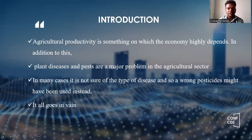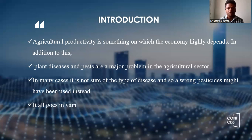Introduction. Agriculture productivity is something on which the economy highly depends on. In addition to this, plant disease and pests are a major problem in the agricultural sector. In many cases, it is not sure of the type of disease and so a wrong pesticide might be used instead. It all goes in vain when we use a wrong pesticide, so we have to use the correct pesticide for the correct disease.